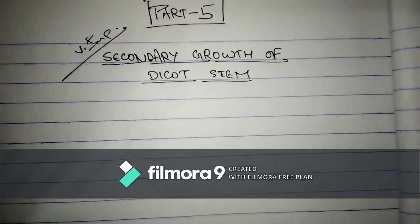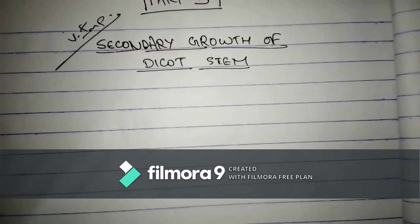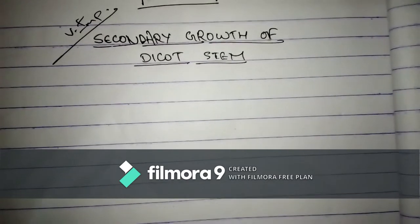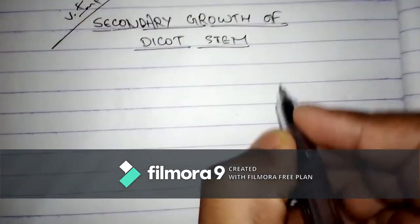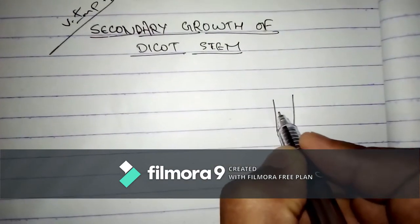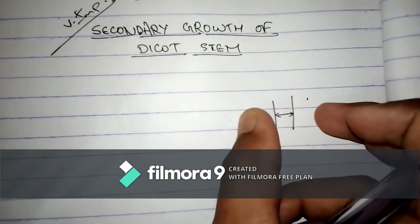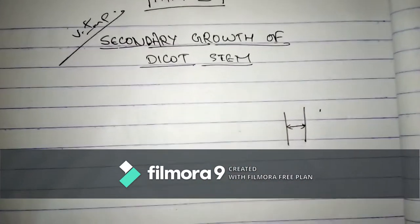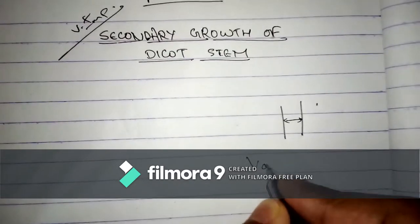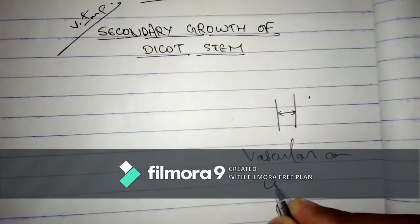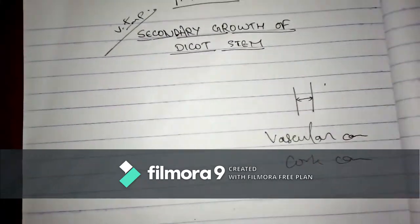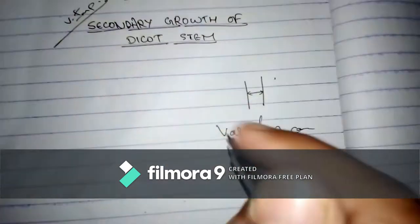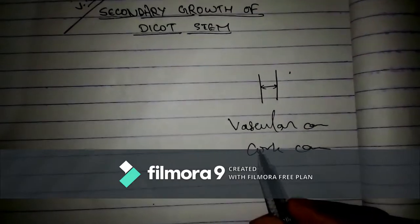We need to understand the meaning of secondary growth. Secondary growth is defined as the increase in the diameter of the axis — or the thickness or the girth of the stem. It means if this is the stem, secondary growth means the increase in its diameter, due to the lateral meristems — that is, due to the vascular cambium and the cork cambium.